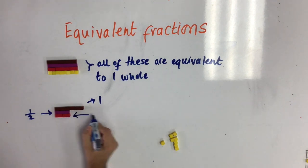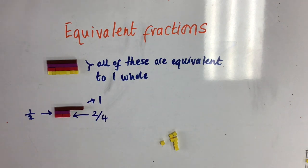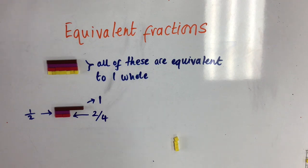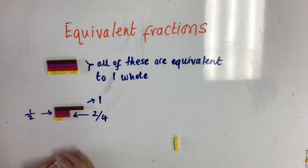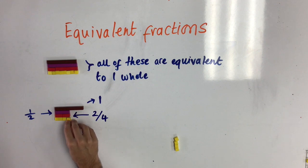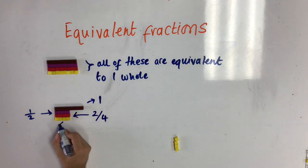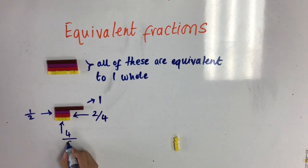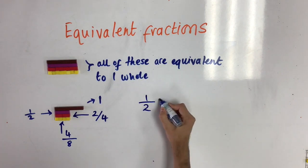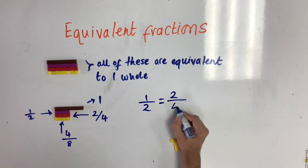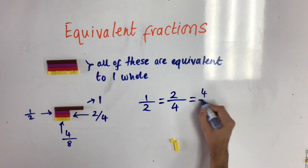Which means that two quarters and one half are equivalent. I'm going to use the same strategy to find out how many eighths are also equivalent to one half. I need to put the yellow eighths underneath the quarters until it takes up the same amount of space. I can see here that four eighths are equivalent to one half because they take up the same amount of space. So one half is the same as two quarters, which is the same as four eighths.